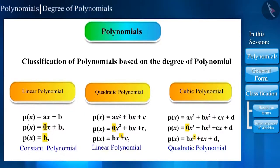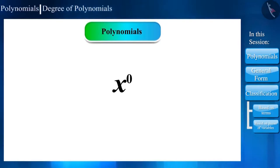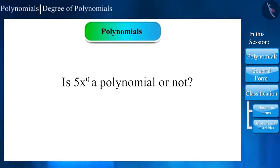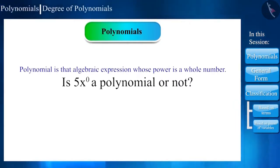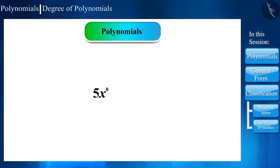Let's assume that there is an expression whose power is 0. For example, 5 times x to the power of 0. Then, would it be a polynomial? During such dilemmas, we should focus on the definition, which says that if the power of any expression is a whole number, then the expression is a polynomial and 0 is a whole number. Hence, it is a polynomial. The value of x to the power of 0 in 5 times x to the power of 0 is 1. That is, 5 times x to the power of 0 equals to 5. Means, any number can be written as the polynomial with power 0.